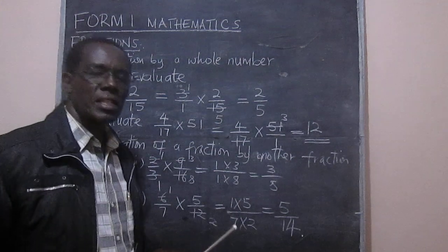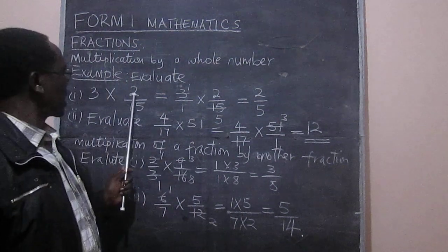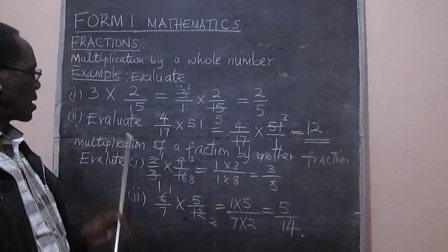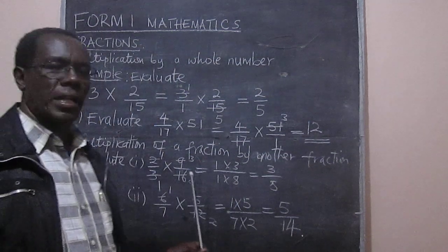So that is how we multiply a fraction by a whole number, and how we multiply a fraction by another fraction.